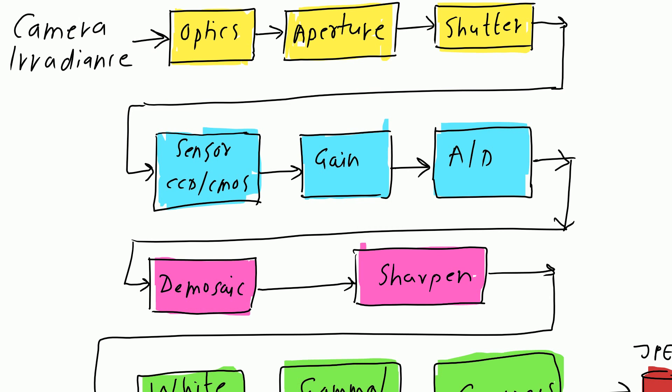This is the block diagram of a digital camera. In this section we develop a simple model that accounts for the most important effects such as exposure that is gain and shutter speed, non-linear mappings, sampling, aliasing and noise.